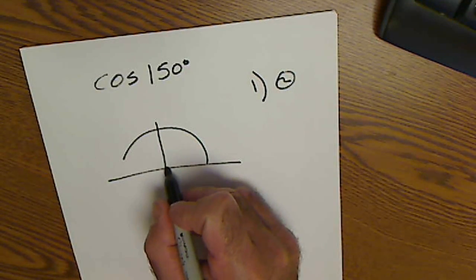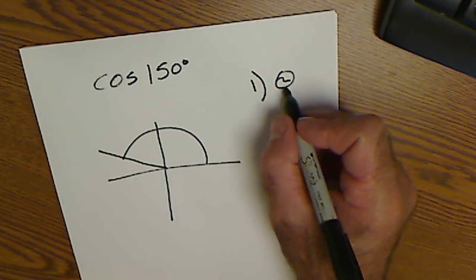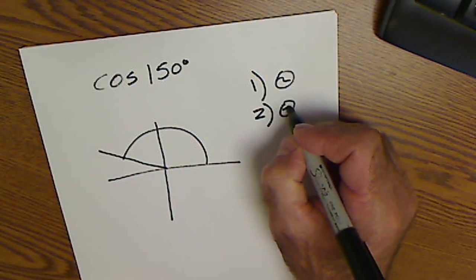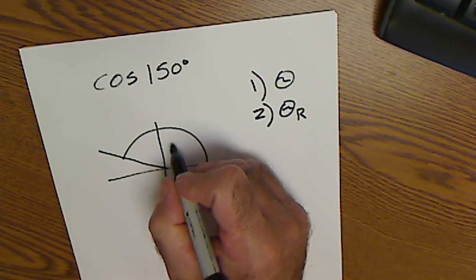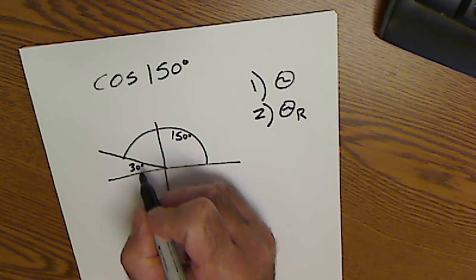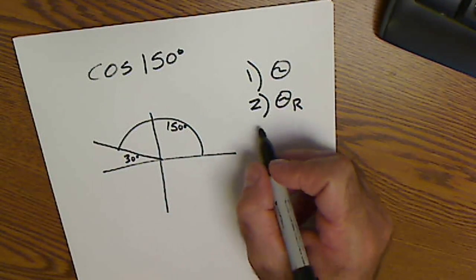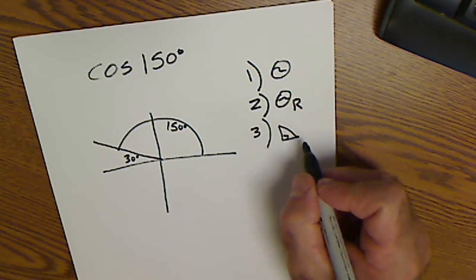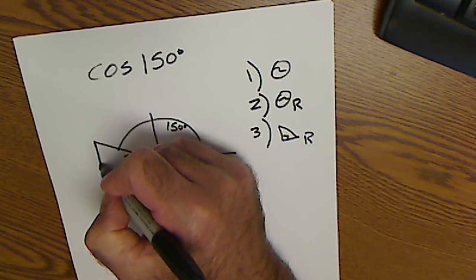That's my angle. Next step is graph my reference angle theta sub r. This is 150, 30 degrees to the axis. There's my reference angle. Step 3, create your reference triangle, so drop in to the x-axis.